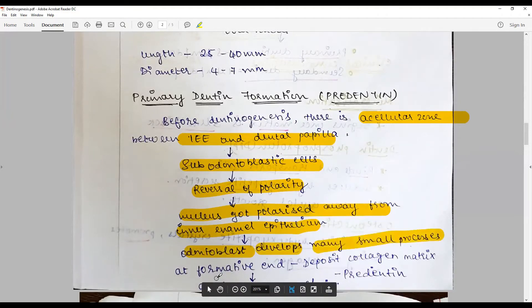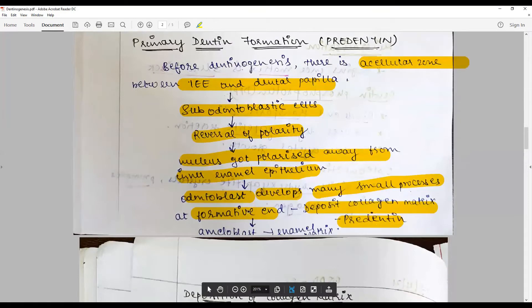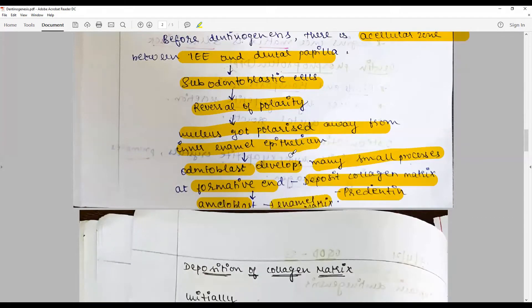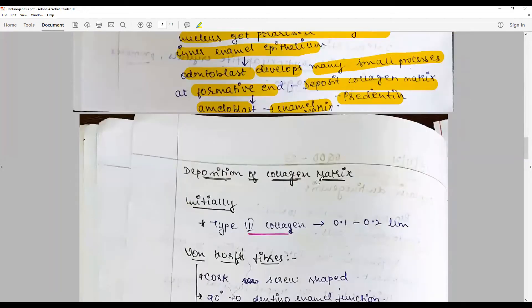The odontoblast develops many small processes at the formative end that start to deposit collagen matrix, which is also called predentine. This stimulates the formation of ameloblasts to secrete enamel matrix. This is called reciprocal induction.